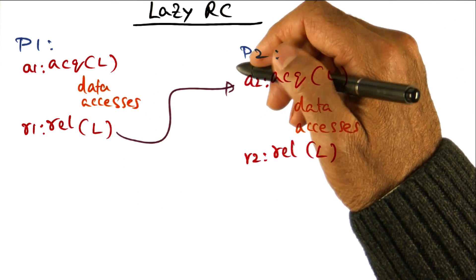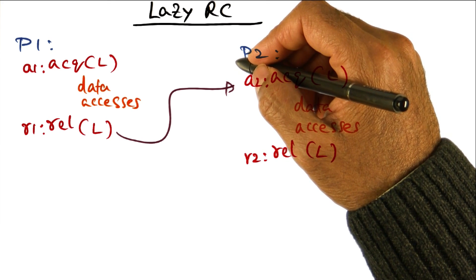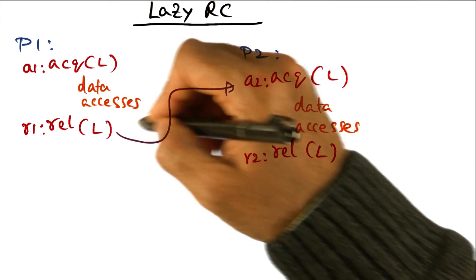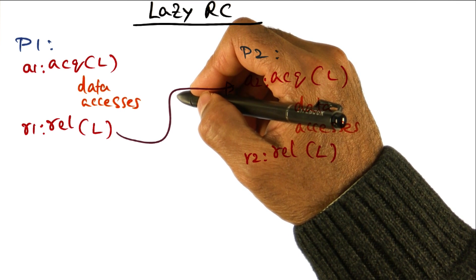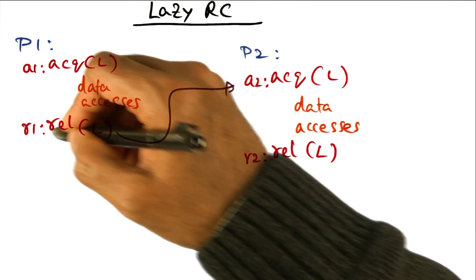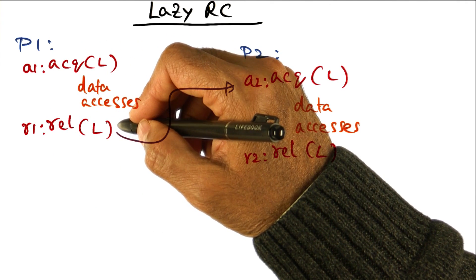That's the semantic, and this is what is called eager release consistency, meaning that at the point of release, you're ensuring that the whole system is cache coherent. The whole system is cache coherent at the point of release, then you're releasing the lock.